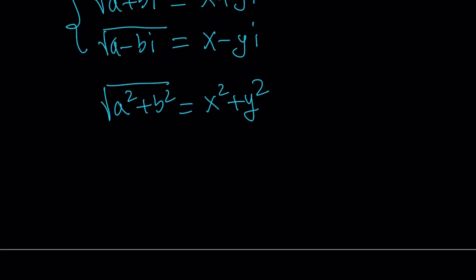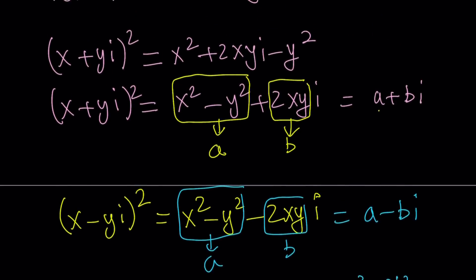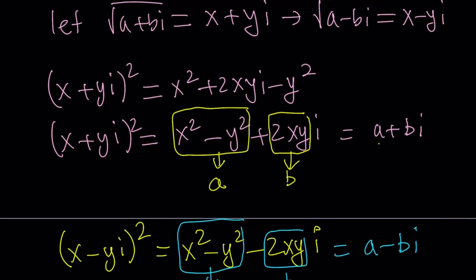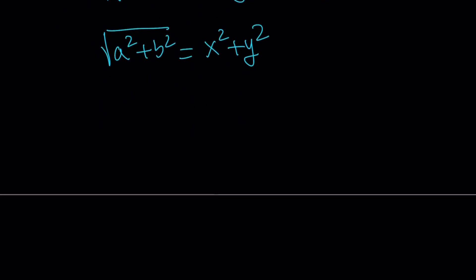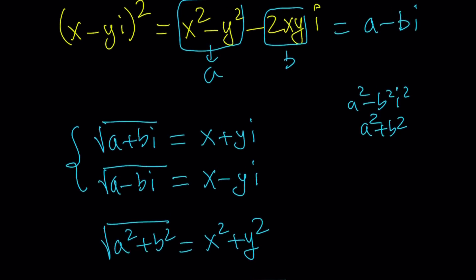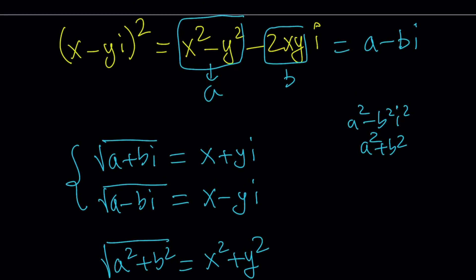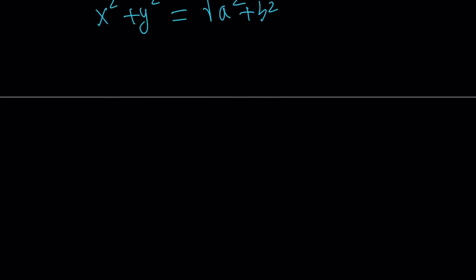Remember, we're trying to solve for x and y in terms of a and b. So let's rewrite this as x squared plus y squared equals the square root of a squared plus b squared. And when we squared both sides earlier, we got another equation we can use: x squared minus y squared equals a. Now we have a system — let's add these two equations together.